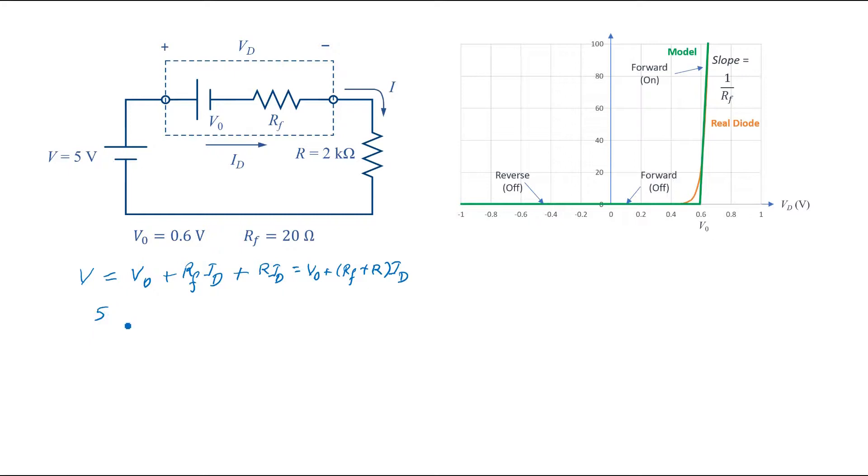And now by putting the numerical values, we have an equation where the only unknown is the current in the diode. From here we can calculate ID which is equal to 2.18 milliamps.